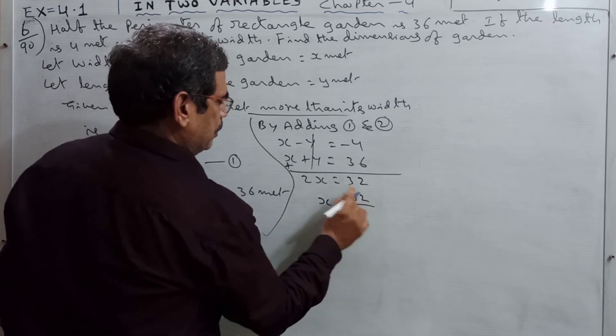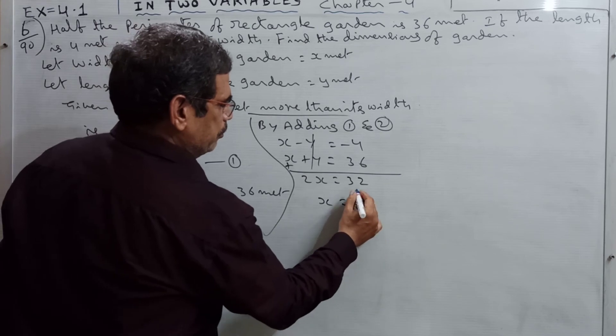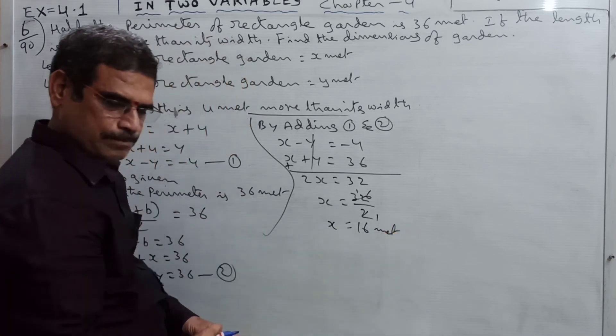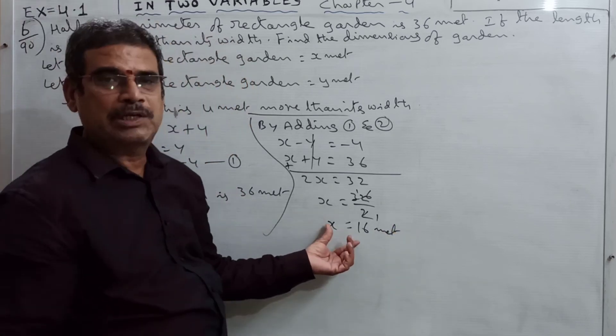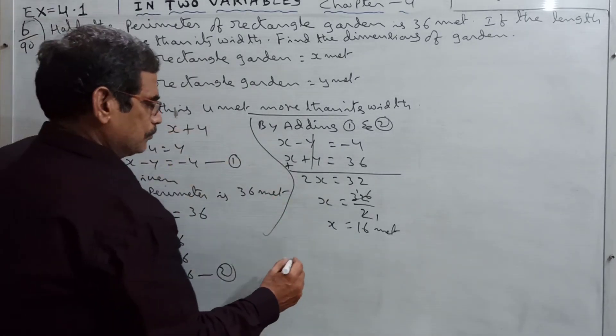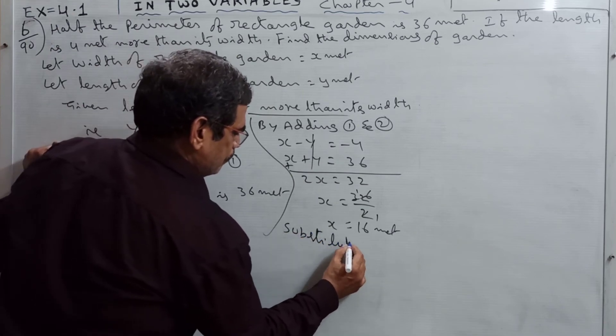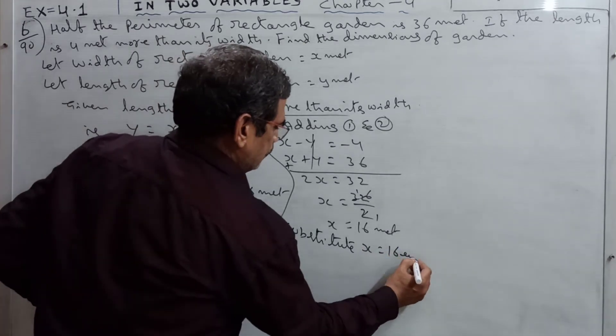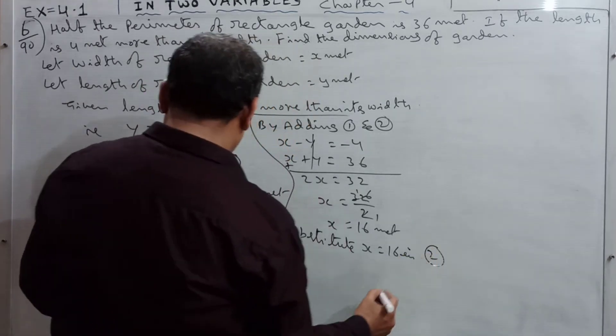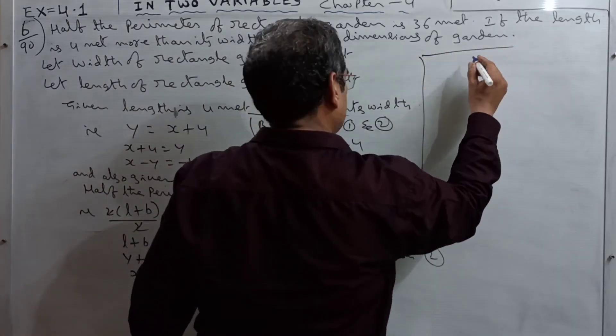x equals 32 divided by 2. Cross multiplication and division, that equals 16. So x is equal to 16 meters. Now substitute the x value in the second equation.